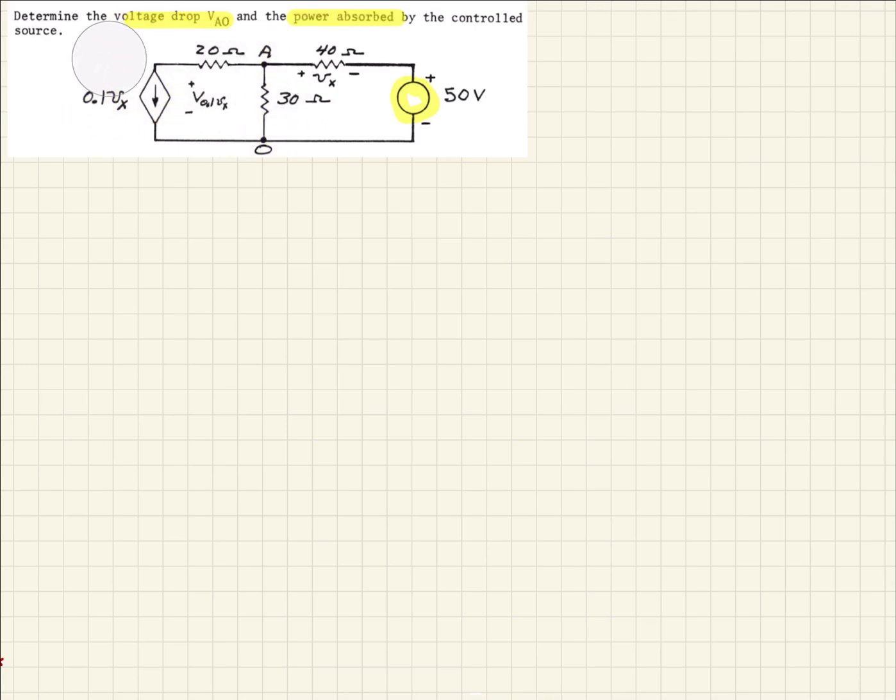So let's take a look at this. The first thing we want to do is we'll look at the node A, and we want to do a current calculation, and with the current leaving the node as positive.